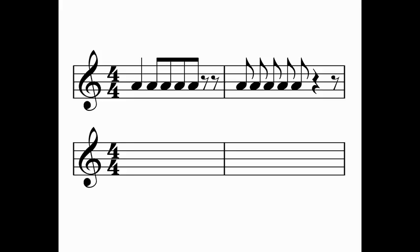Let's return to our original passage and see if we can simplify it by following these rules. Our aim is not to change the sound of the music but to make it easier to read while maintaining the exact same sound. Looking at the first bar, there is no divide down the middle. We need to split the beam of these quavers in half to maintain the imaginary line down the middle of the bar. There are also two quaver rests at the end of the bar — it would be much simpler to write just one crotchet rest.